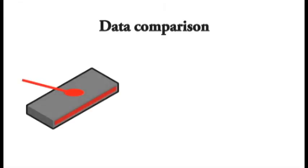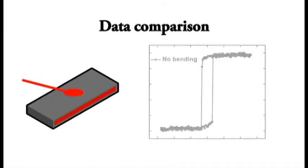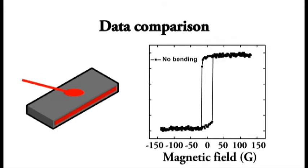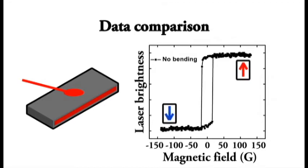Without bending the sample, we measure data that looks like this, where the x-axis describes the magnetic field that we apply and the y-axis indicates the direction the magnet is pointing. This graph tells us how easily we can flip the magnet between its two states. This data is a control experiment which tells us how our sample behaves before bending.